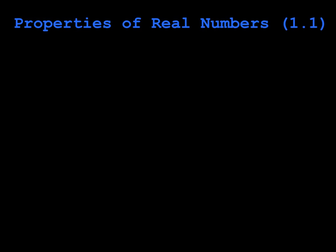Hey guys, this is Mrs. Butcher here today, and we are going to talk about the properties of real numbers. We have six categories of properties that we're going to discuss, and each of these is broken down into one or two different properties based on their operations that they apply to.